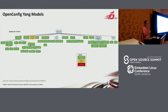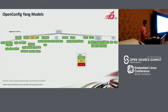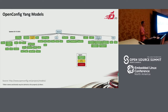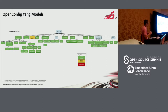We have two YANG models. One is IETF — it's developed and maintained by the telecom vendors, but the progress is very slow. So many service providers, such as Google, Apple, and Amazon, think the IETF YANG model definition progress is very slow. So they developed their own YANG models — which is the OpenConfig YANG models. So far, it has developed and defined more YANG models.